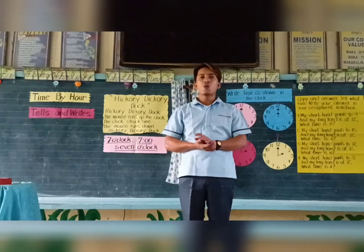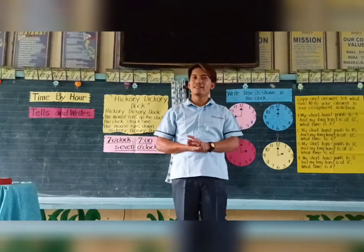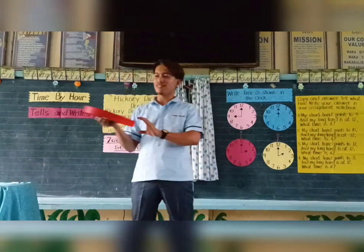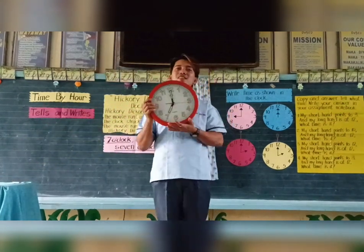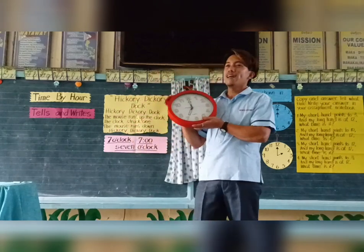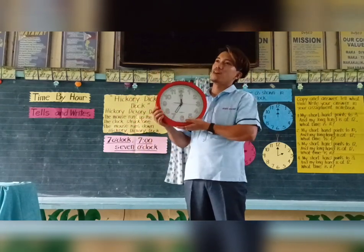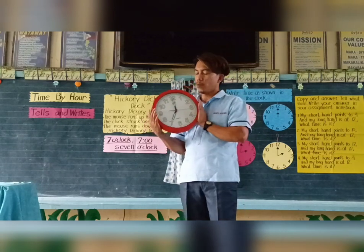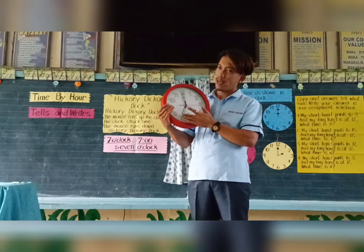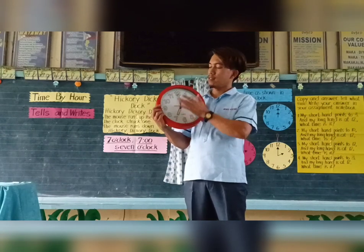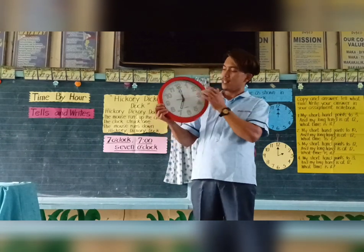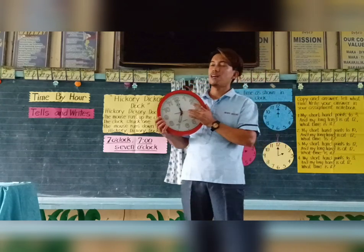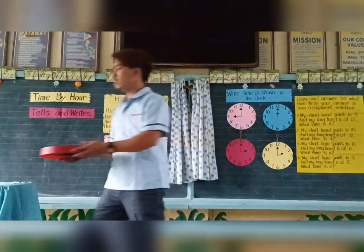So what do we use in telling time? A clock. The clock tells the time. And what are the parts of a clock? We have the short hand, the long hand, and the red one here is the second hand. Very good!